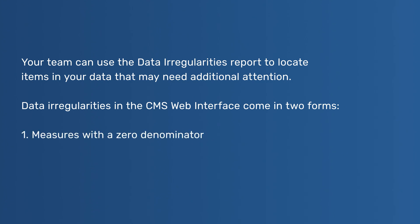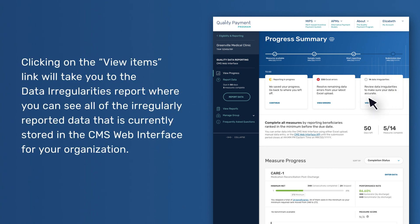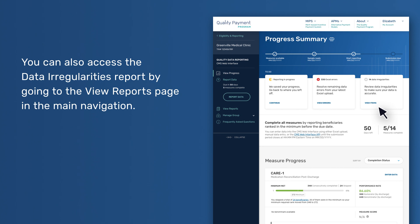1. Measures with a zero denominator. 2. Data inconsistencies. If you have data irregularities to review, the View Progress page will display a To-Do item at the top of the page titled Data Irregularities and will show you the number of data items to review. Clicking on the View Items link will take you to the Data Irregularities report, where you can see all the irregularly reported data currently stored in the CMS Web Interface for your organization. You can also access the Data Irregularities report by going to the View Reports page in the main navigation.